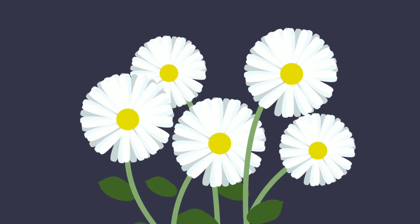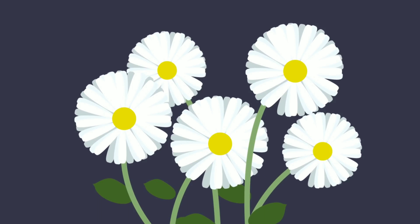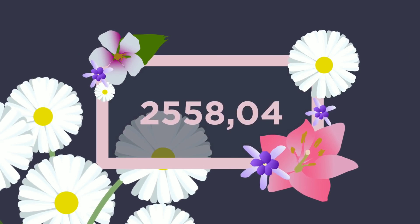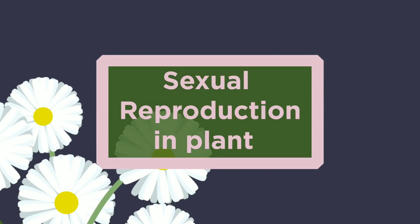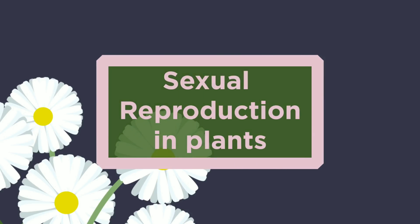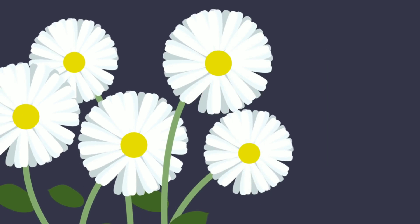In this video we will be looking at sexual reproduction in plants. Did you know that there are an estimated 390,900 plant species known to science? This diversity of plant species is in part due to sexual reproduction.